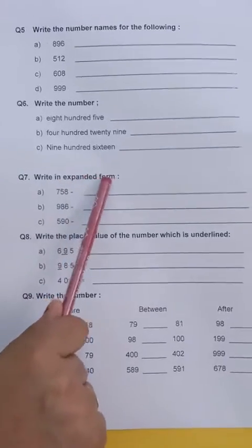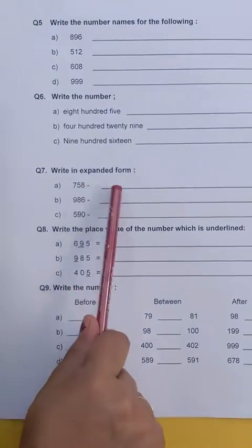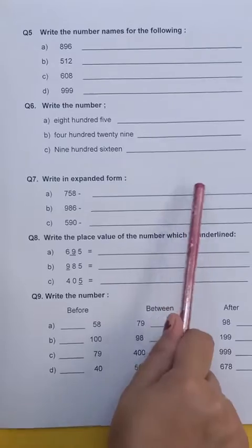You will write in expanded form. That means if a number is given 758, you will write it as 700 plus 50 plus 8.